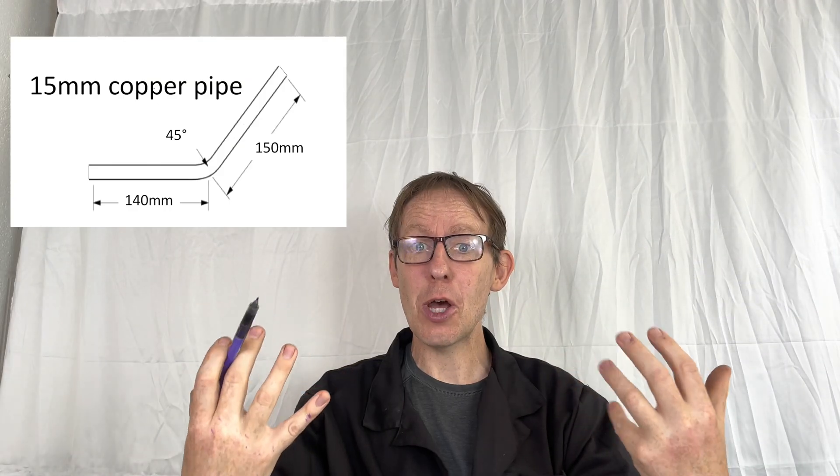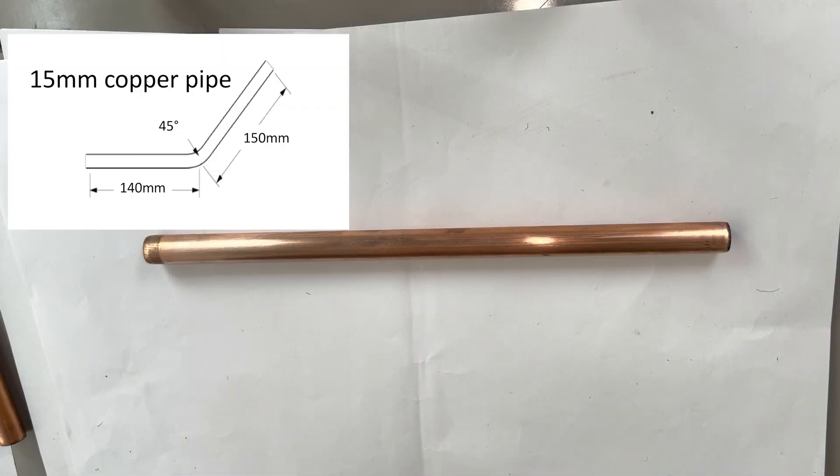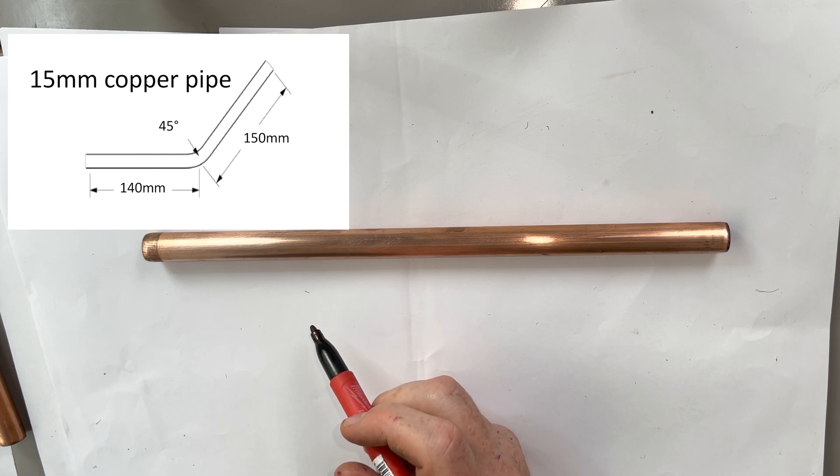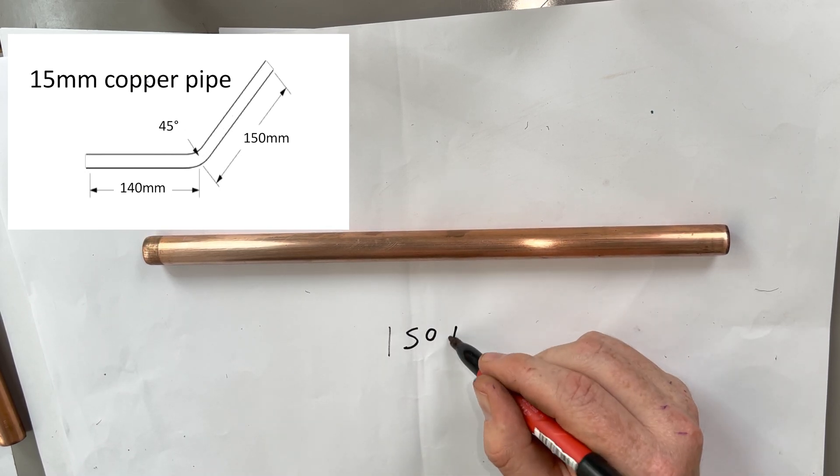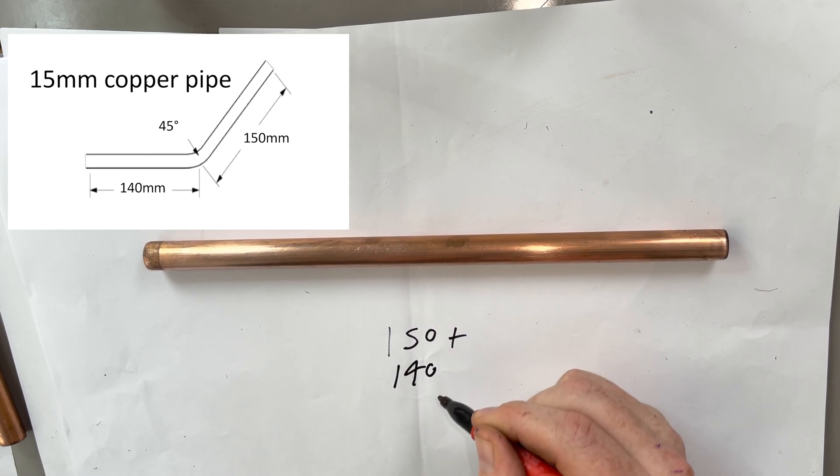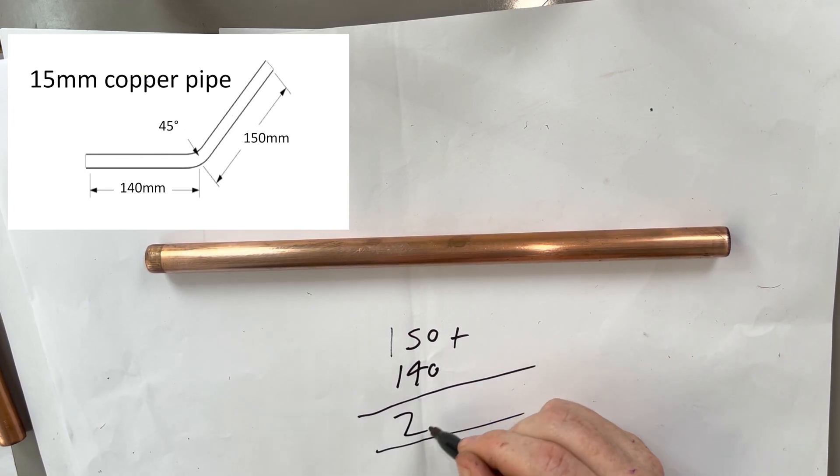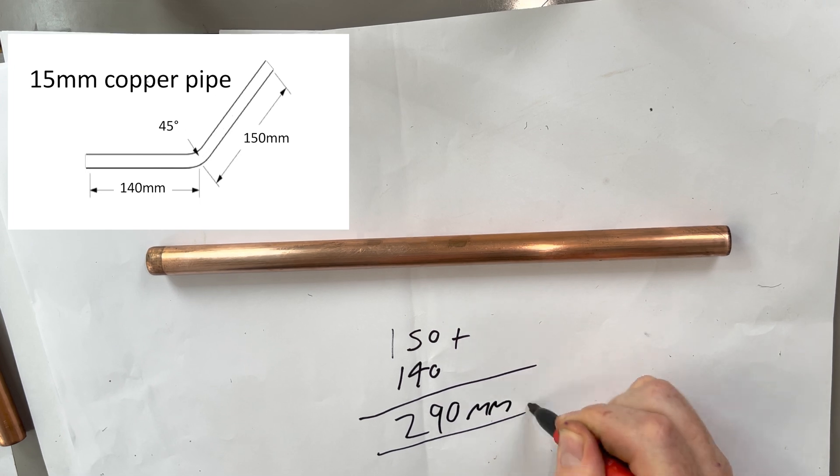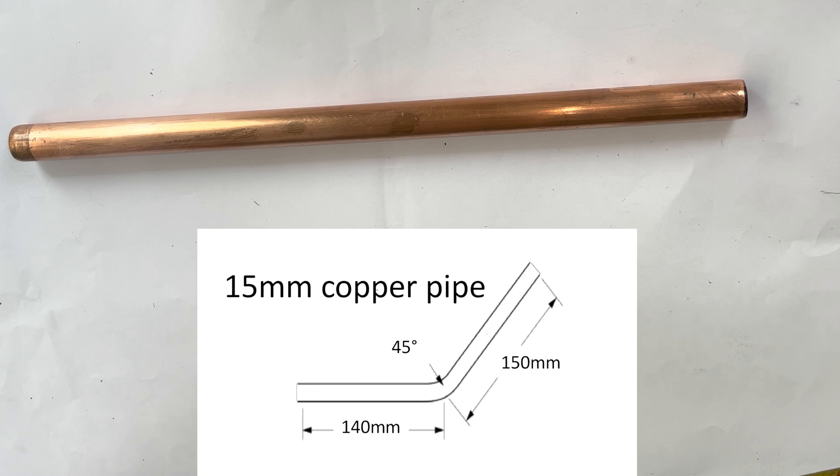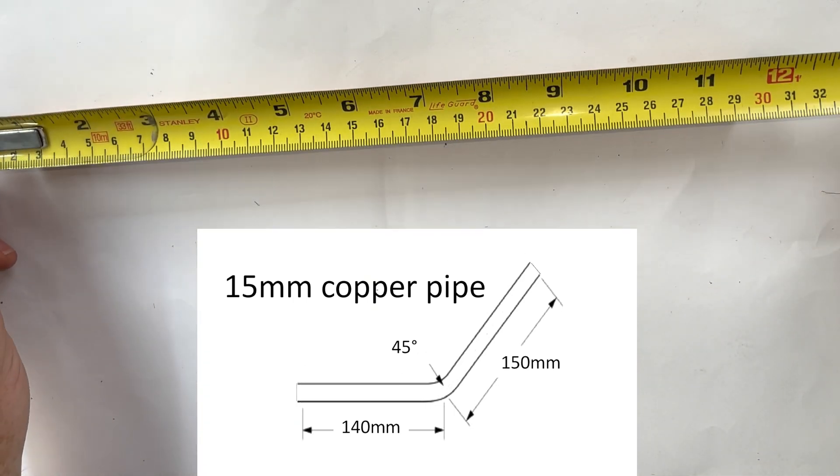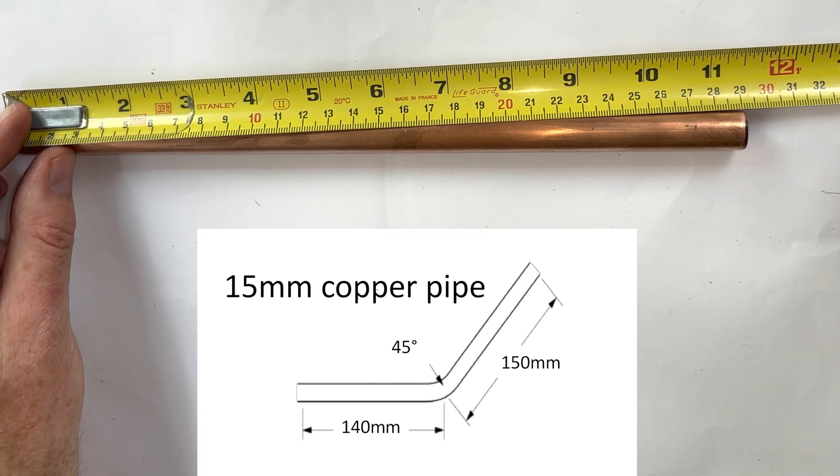Let's look at a basic measuring and bending technique. How much pipe do we need? 140 millimeters plus 150 millimeters equals 290 millimeters. Right, let's measure 140 mil and mark it.